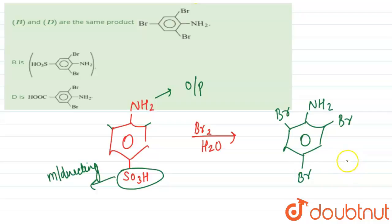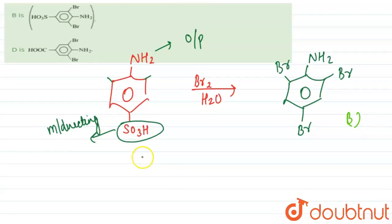This is the product for our first reaction, so this is product B. When we talk about our second product, it will occur in a similar manner. As we know, carboxylic acid is also a meta-directing group.